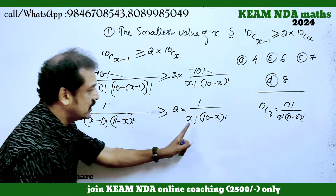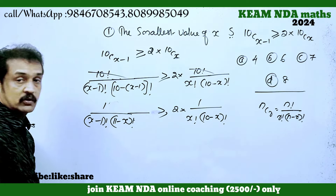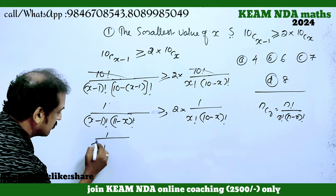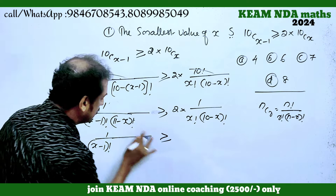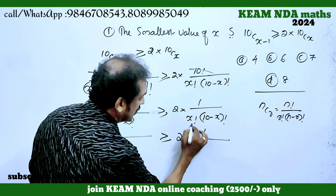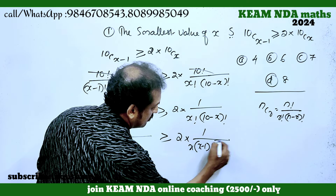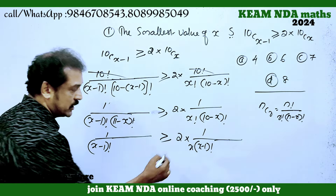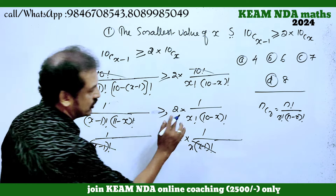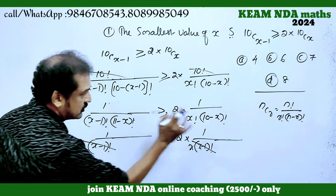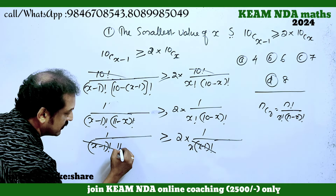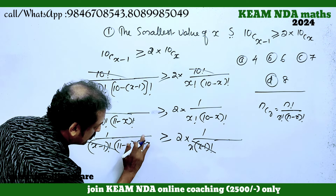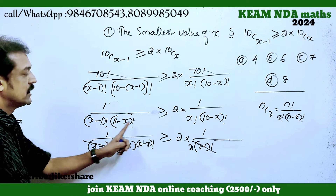We look at (x-1) factorial and x factorial. We note that x factorial equals x into (x-1) factorial, so we can cancel (x-1) factorial from both sides. Also, (11 minus x) factorial equals (11 minus x) into (10 minus x) factorial, so (10 minus x) factorial cancels from both sides.